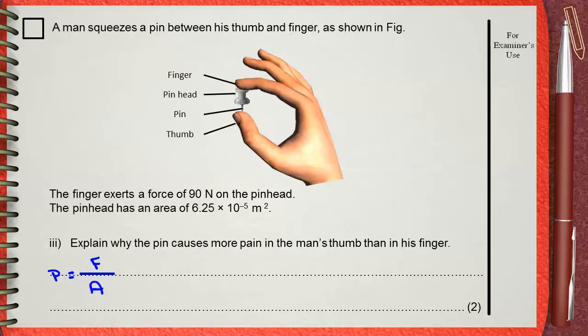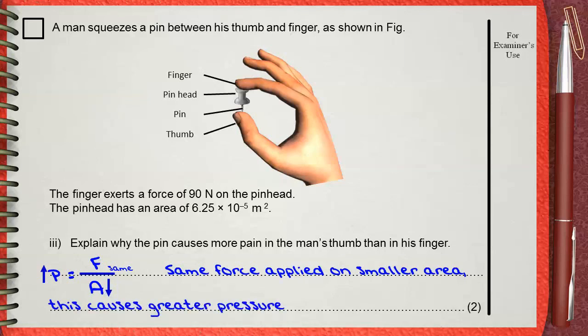If we look at the rule, pressure equals force over area - even though the force is the same, the surface area of contact between the pin and the thumb is smaller. This makes the pressure on the thumb higher according to this equation. The same force applied on a smaller area causes greater pressure.